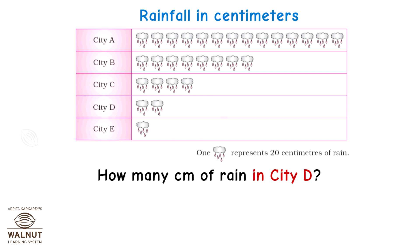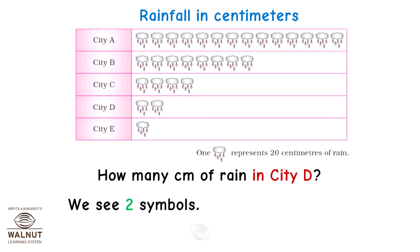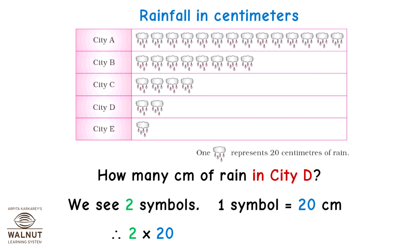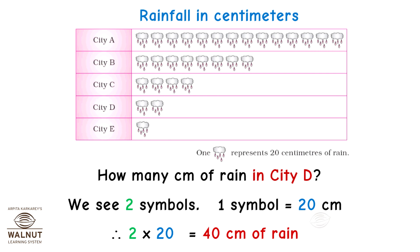How many centimetres of rain in city D? We see two symbols; one symbol is equal to 20 centimetres, therefore 2 into 20 which is equal to 40 centimetres of rain in city D.